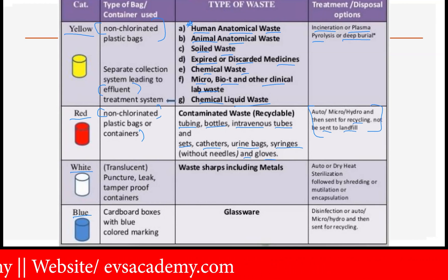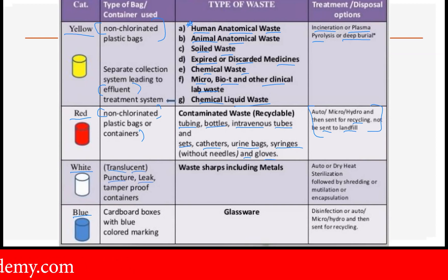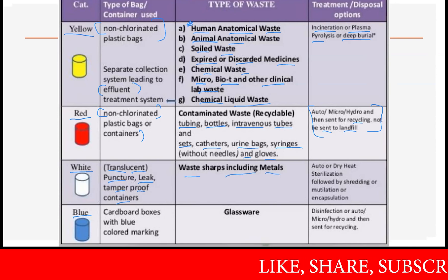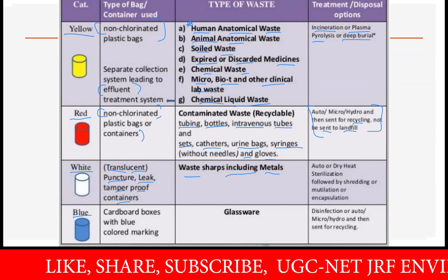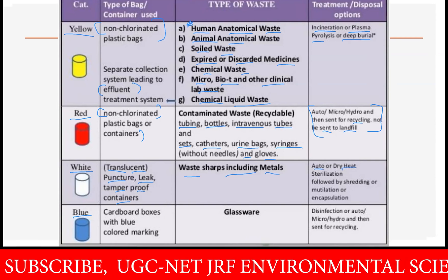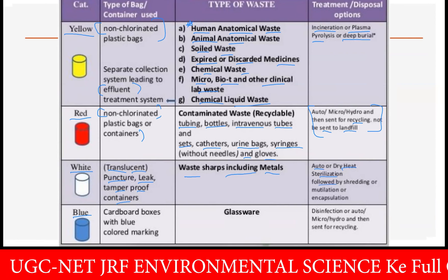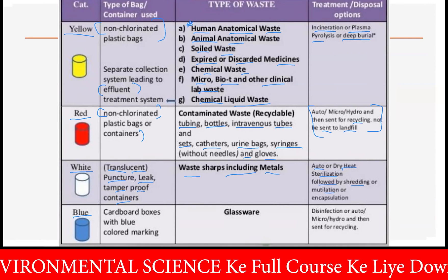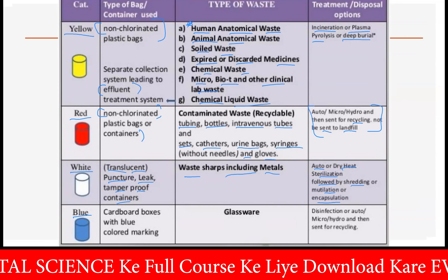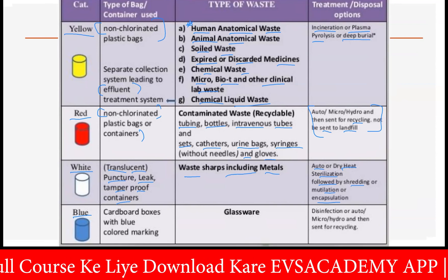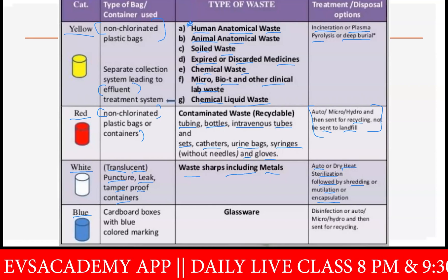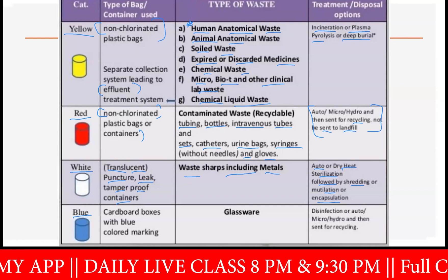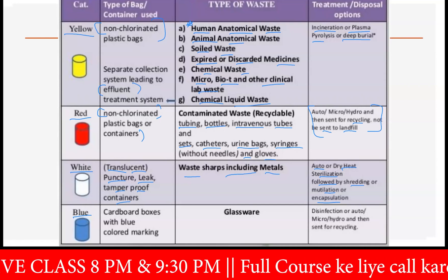Then the white bag, which is made up of translucent plastic — puncture-proof, leak-proof, or tamper-proof containers. Waste sharps including metals are all under this white category of bag. For the treatment, autoclave or dry heat sterilization followed by shredding or mutilation and encapsulation is done. So autoclave or dry heat sterilization is mainly done, or through shredding all the things are completely destroyed or decomposed.